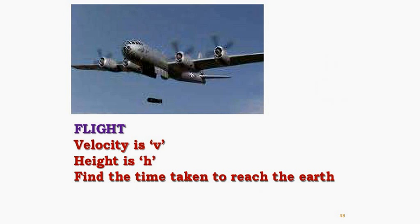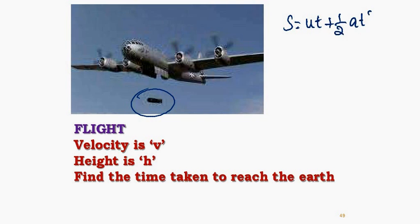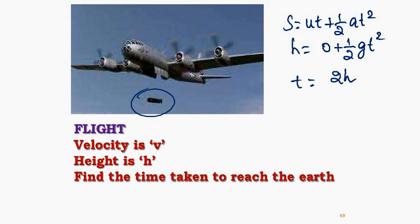If there is a flight moving with velocity V at height H, and a bomb is dropped from it, what is the time to reach the ground? Since it is dropped the initial vertical velocity is zero. Using the equation H equals half times g times T squared, you get T equals root of 2H divided by g. By this time the aircraft has moved on, so the target on the ground can escape from the drop point.